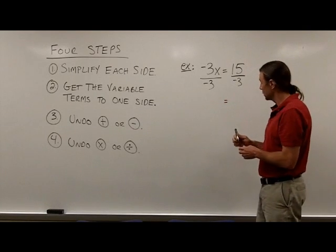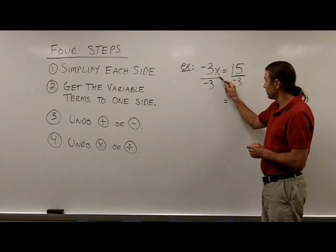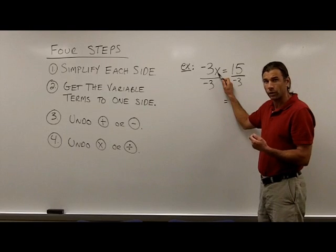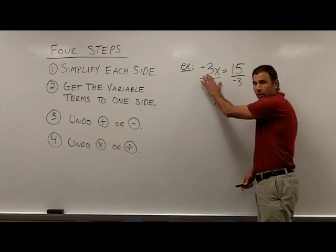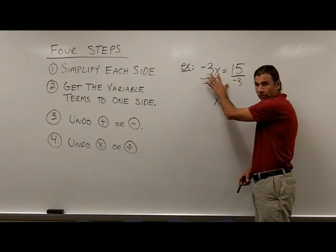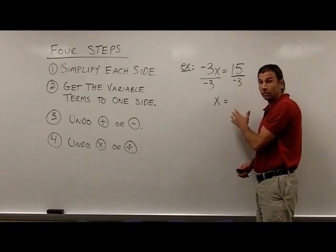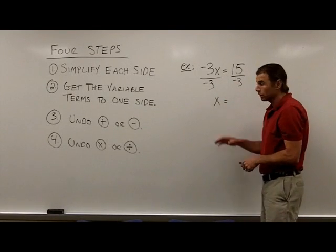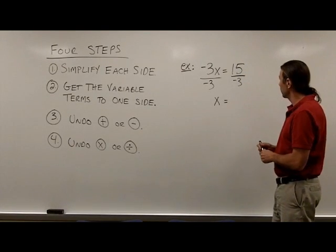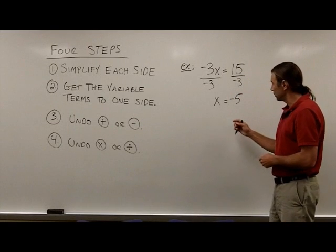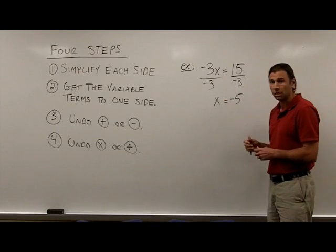Negative 3 divided by negative 3 gives positive 1, so we're left with just x on the left side — that's the variable isolated. On the right side, positive 15 divided by negative 3 gives negative 5. Once the variable is isolated, it's easy to see what x must equal to make this a true statement: x equals negative 5.